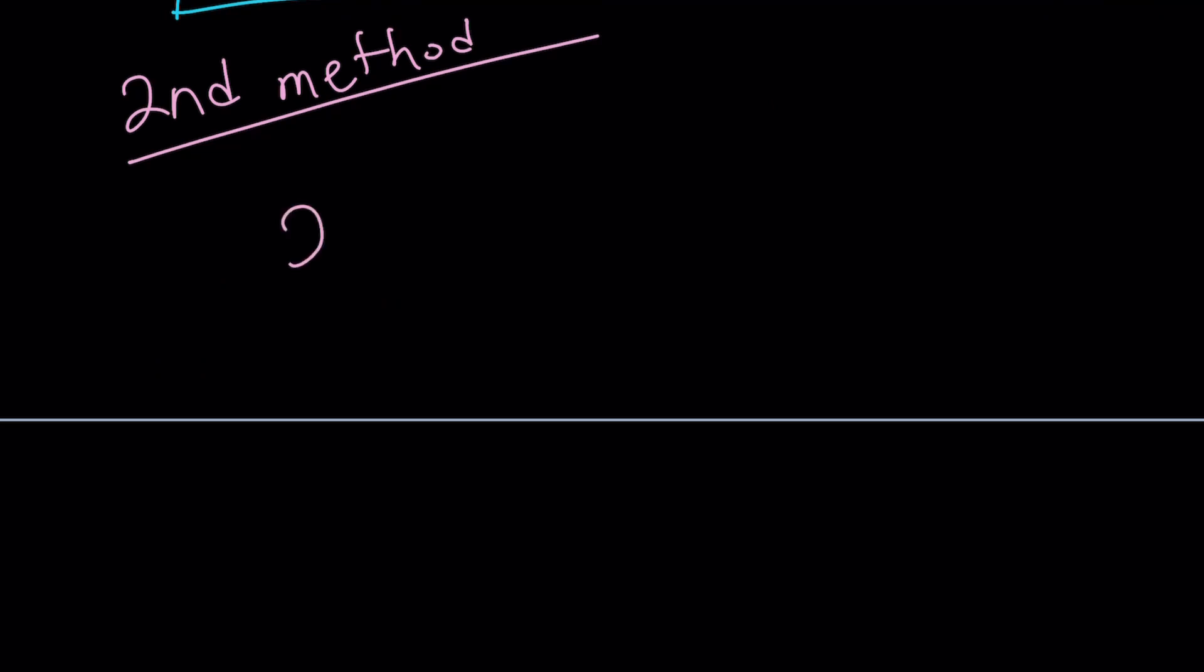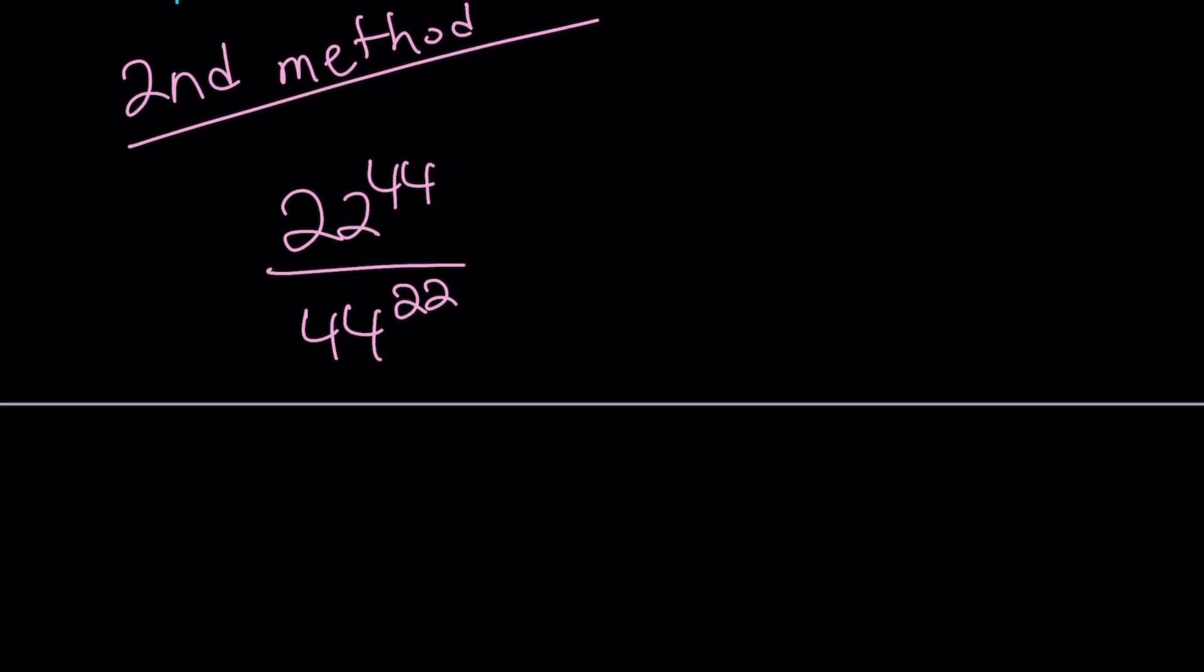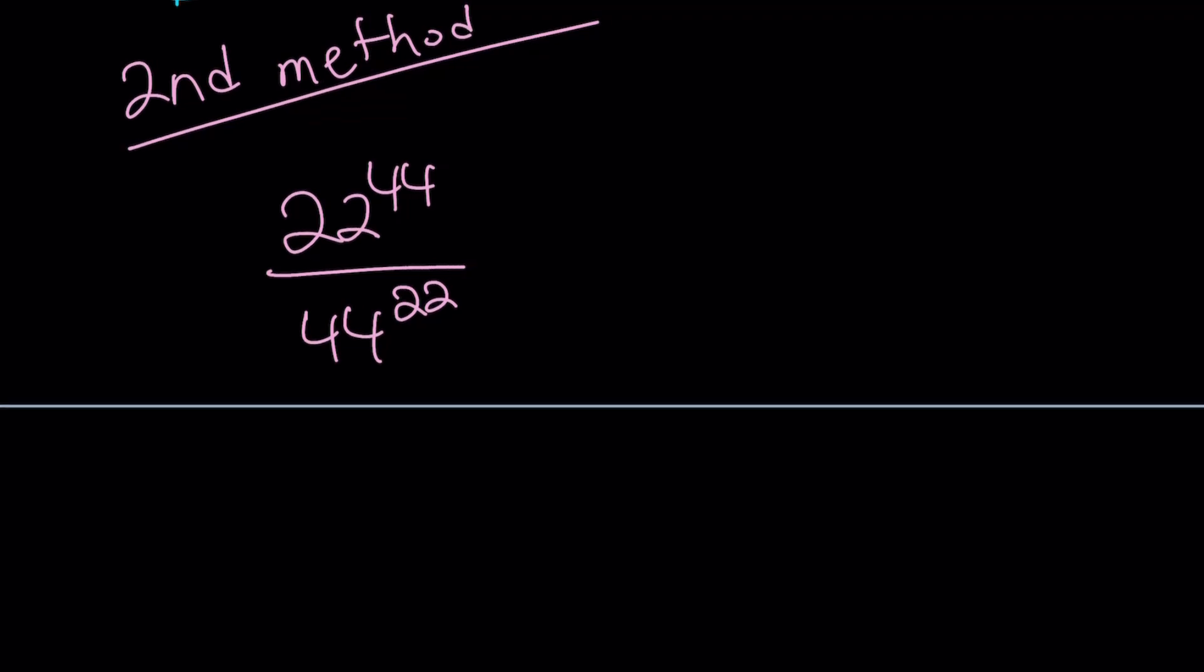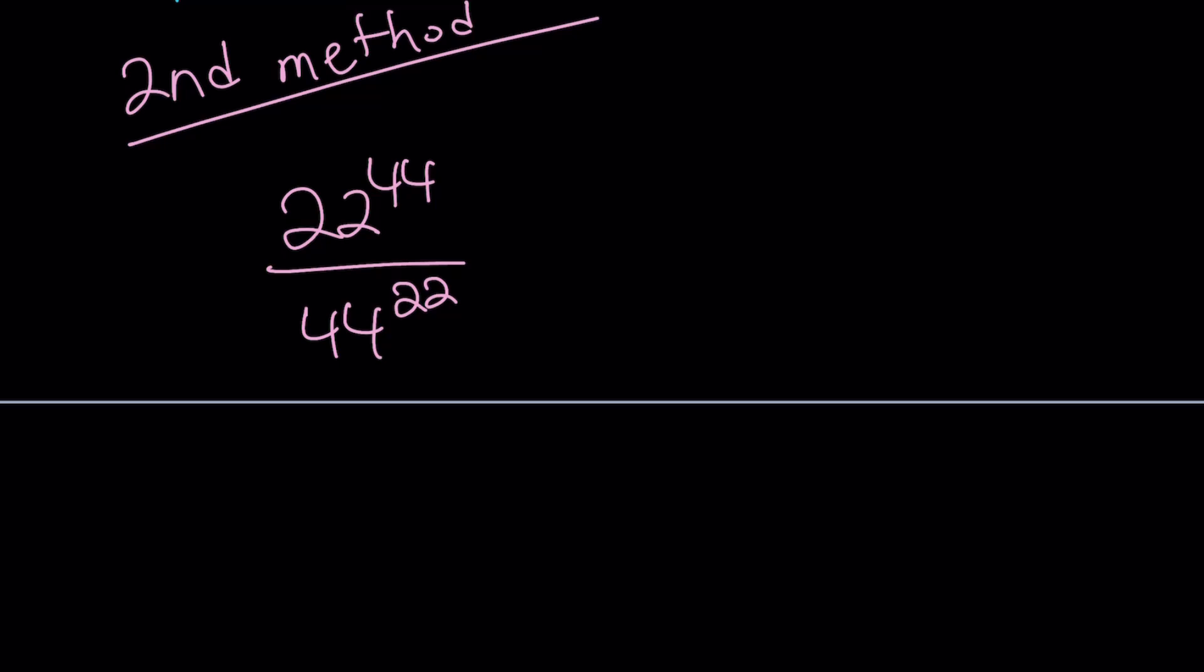We start with the original problem: 22 to the power of 44 divided by 44 to the power of 22. What makes the second method different from the first one is that with the first one, we broke down the base in the denominator. This time, we're going to do it differently. We're going to write the numerator as something squared.